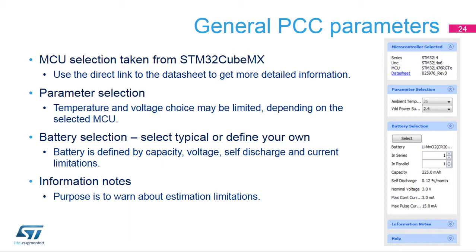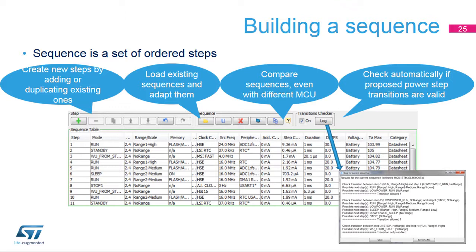The battery source is optional and, if defined, may be used in only selected sequence steps, simulating a device that works both independently and connected to an external power source. The Sequence table defines a series of steps with different durations and configurations, and its length is virtually unlimited. Sequences can be loaded, modified, and reused. Individual steps can be duplicated and repositioned within the sequence. If enabled, all state transitions are checked against basic validity rules to prevent illegal jumps in frequency or power ranges. Problematic steps are instantly highlighted in the Sequence table; click the Show Log button to display a detailed explanation.